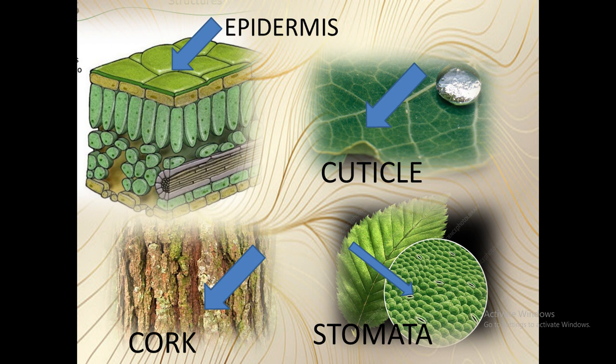Stomata are mainly used for the process of transpiration — transpiration means water loss in the plant. The second tissue is cork. In higher or woody plants, the outermost tissue in stems is transformed into a specialized protective tissue called cork. Cork cells are dead cells with no intercellular space. The walls of cork cells are thickened by the deposition of suberin.